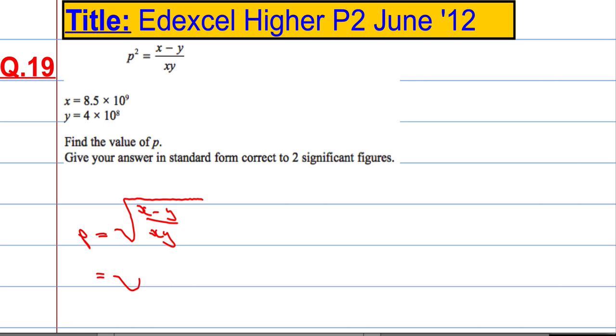Which in this case is going to be the square root of, and substituting in, 8.5 by 10 to the power 9, subtract 4 by 10 to the power 8, and that's divided by 8.5 by 10 to the power 9, times by 4 by 10 to the power 8.